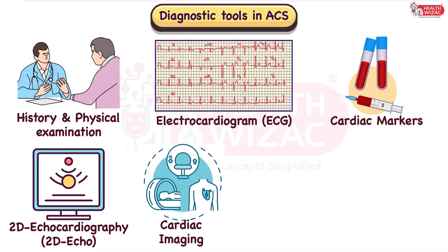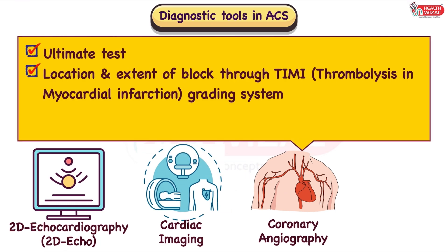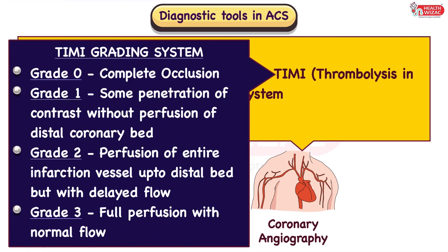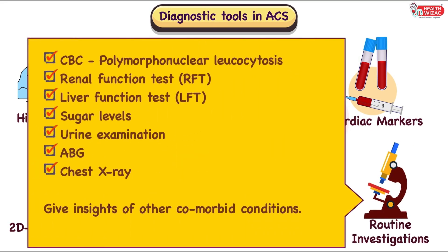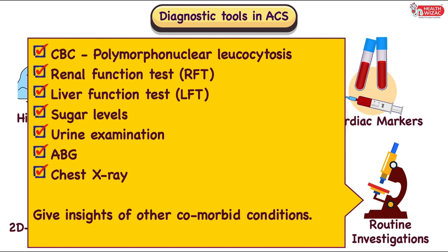Coronary angiography or CAG proves to be the ultimate test in diagnosing ACS, as it gives us the location and extent of block through the TIMI grading system, where TIMI stands for Thrombolysis in Myocardial Infarction. In the TIMI grading system: Grade 0 is complete occlusion; Grade 1 is some penetration of contrast but without perfusion of the distal coronary bed; Grade 2 is perfusion of the entire infarction vessel up to the distal bed but with delayed flow; and Grade 3 is full perfusion with normal flow. Other supporting investigations include CBC, which may show polymorphonuclear leukocytosis, LFT, RFT, sugar levels, urine examination, arterial blood gas levels, and X-ray, which may give insights about other comorbid conditions.